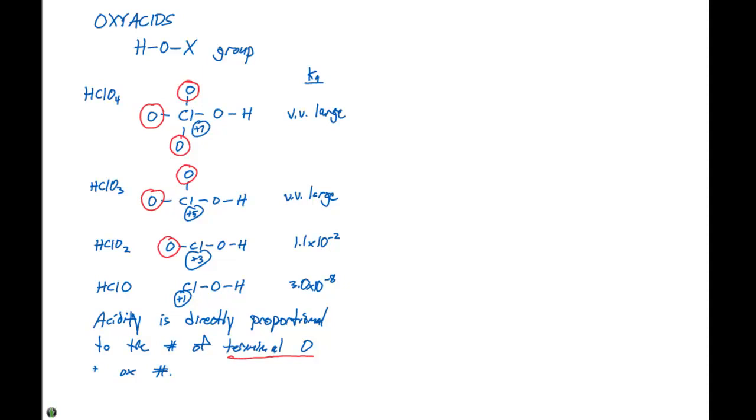We can go over a couple more examples. So let's look at H2SO4 versus H2SO3. And if we draw the structures of each of these, H2SO4 is going to have an SO4 group with hydrogens here on two of the four oxygens. If we look at the oxidation state of the sulfur, it's going to be plus 6.